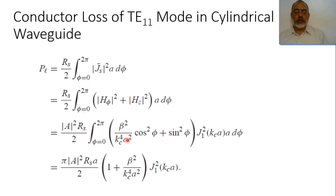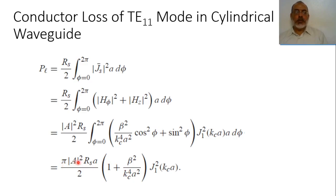By taking these values and integrating with respect to φ — where cos²(φ) or sin²(φ) integrated from 0 to 2π gives π — this yields β²/k_c⁴ times A² plus 1, multiplied by A² R_s times J1(k_c A) over 2. This is the power loss due to conductor loss in the cylindrical waveguide.